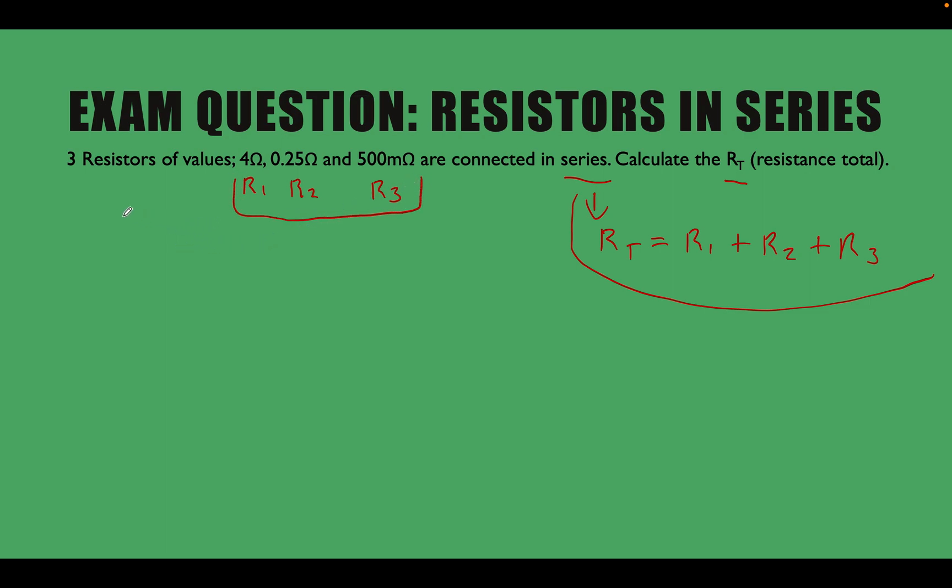What we've got to think about now is, remember, these values have to be in their base value before we can continue with this. R1, 4 ohms. Ohms is the base value of resistance, so we're fine with that one. R2 is 0.25 ohms, so we're okay with that one. These two are absolutely fine to use in our calculation. What about R3?